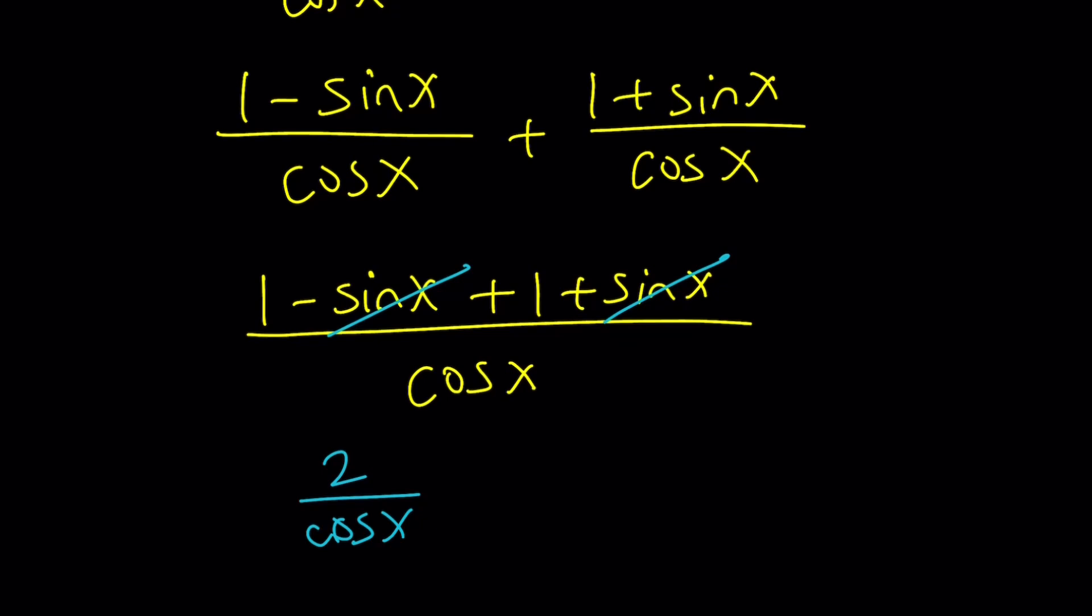So I can go ahead and cancel them out, and I end up with 2 over cosine of x. Now, is this in the simplest form? Pretty much. Sometimes they're going to ask you to write it in a simpler form. I'm not sure if that is the simplest form, but you can use reciprocal functions. So what's the reciprocal of cosine? If you said secant, you're right about that. And so you can also write this as 2 times secant x. But a lot of times, leaving everything in terms of sine and cosine and simplify everything would be good enough, in my opinion. But always check with your teacher or professor.